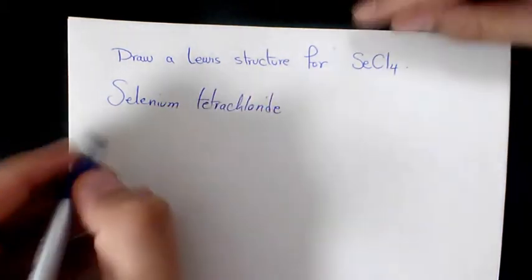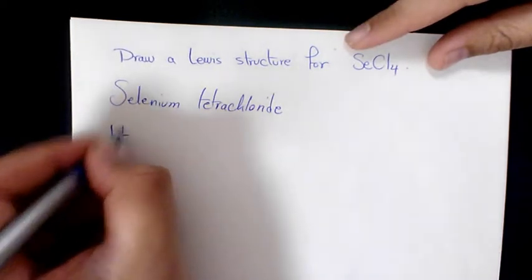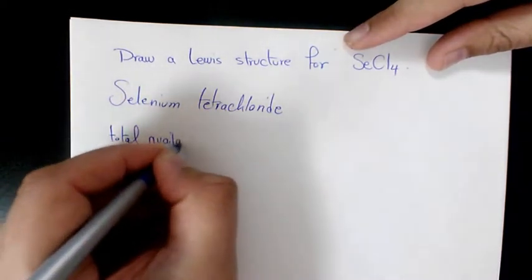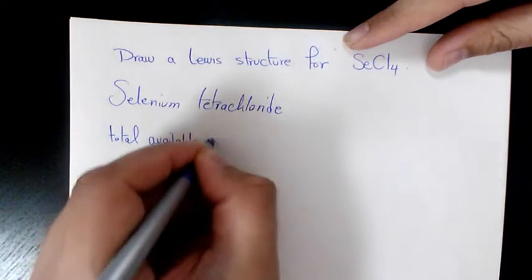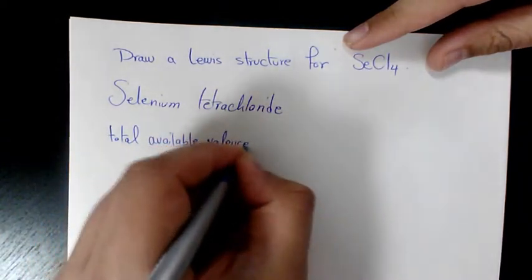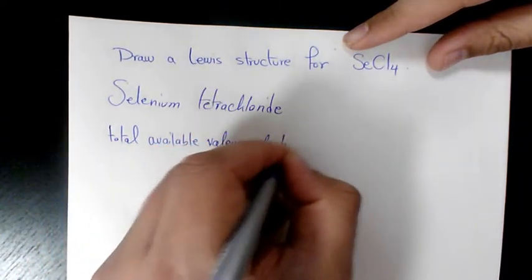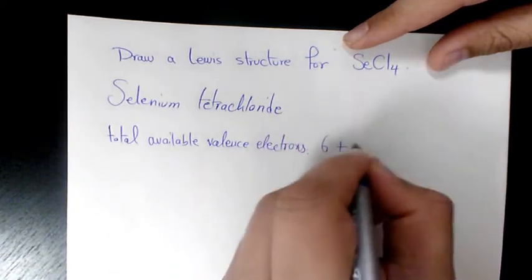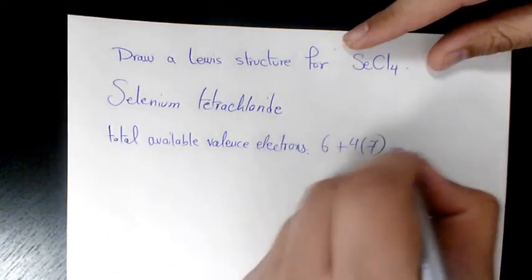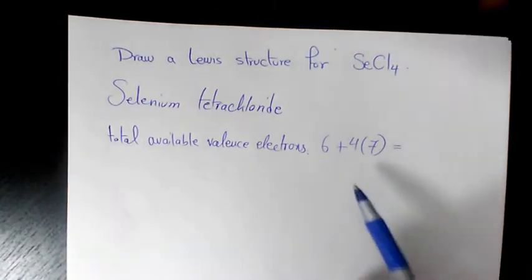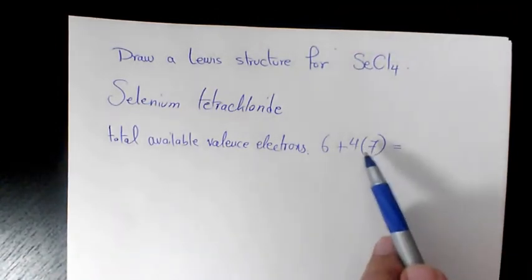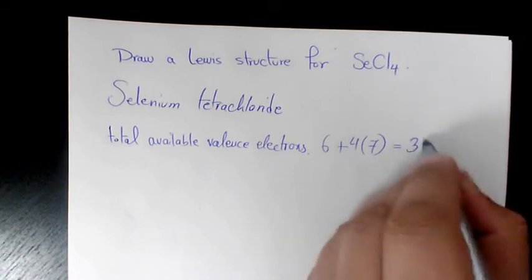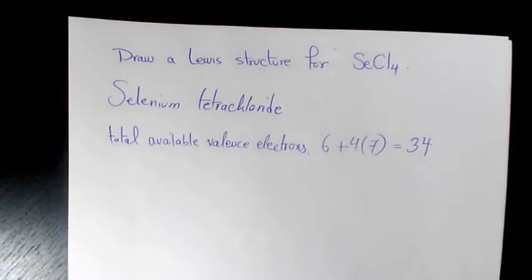So the first thing I need to do, I need to find out the total available valence electrons, which will be 6 for Selenium and 4 times 7 for Chlorine, because we have 4 atoms we need to multiply it by 4, so 28 plus 6 is going to be 34. So we are looking for 34.